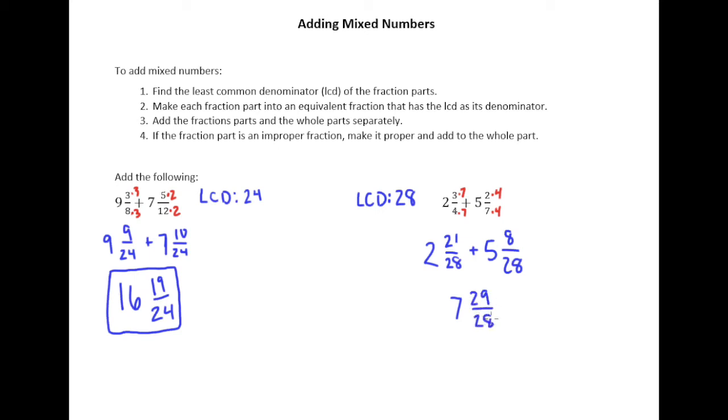So we have 7 and 29 twenty-eighths, but there's a problem here. The problem, of course, is that 29 twenty-eighths is itself an improper fraction. And you can't have an improper fraction within a mixed number. So there's different, there's slight variations in the strategy you can use here. But what I think is the easiest is to just turn 29 twenty-eighths into a mixed number. So let's just do that right over here.